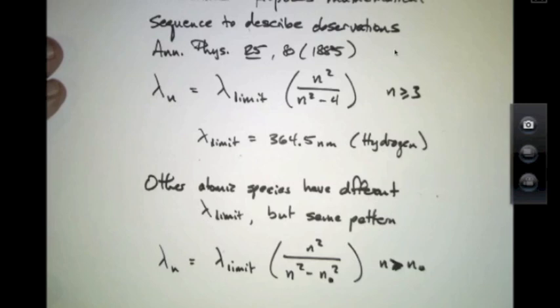Where the number 4 would be replaced by a number n0 squared. And this integer n would be any integer greater than n0. So the Balmer series was the particular case of n0 is 2. But there are other series found for each of these atoms.